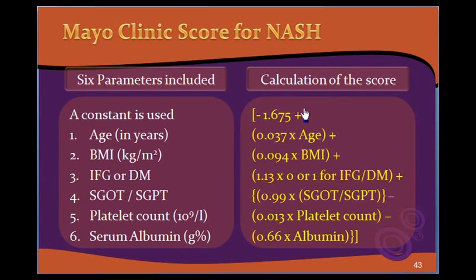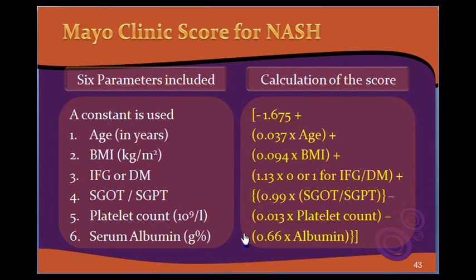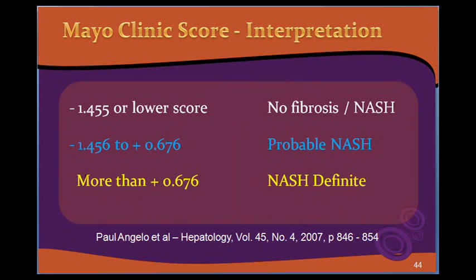The calculation uses a constant of minus 1.675, then multiplies age by 0.037, BMI by 0.094, and 1.13 times yes or no for diabetes (yes equals 1, no equals 0). The SGOT/SGPT ratio is multiplied by 0.99, platelet count by 0.13, and albumin value in grams per cent by 0.66. Combining these values produces the score, which is then interpreted as shown in the next slide.